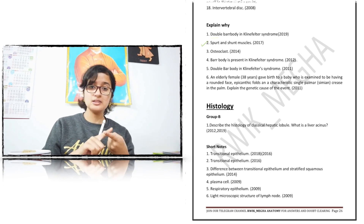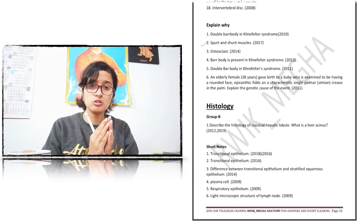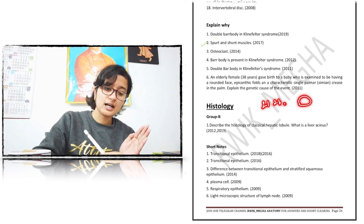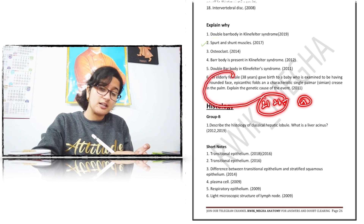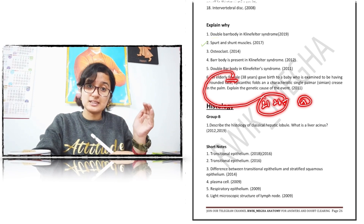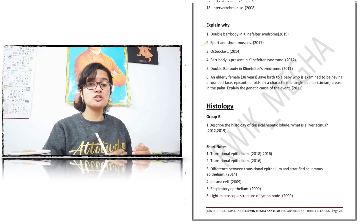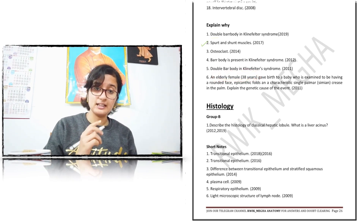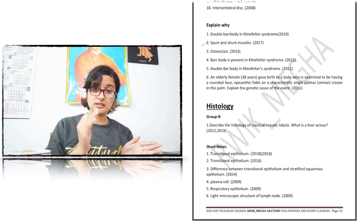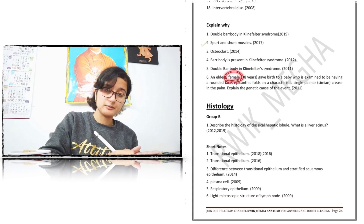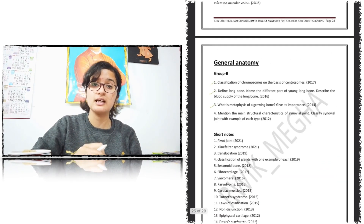This trisomy occurs due to non-disjunction of chromosomes, which leads to aneuploidy — similar to Klinefelter syndrome. This happens because of abnormal meiosis: the chromosomes do not separate, so one gamete contains two copies of chromosome 21 and the other gamete lacks chromosome 21. This abnormal gamete formation mainly occurs in elderly females — as the female's age progresses, the chances of abnormal meiosis increase. So babies with Down syndrome are mostly born to elderly mothers.